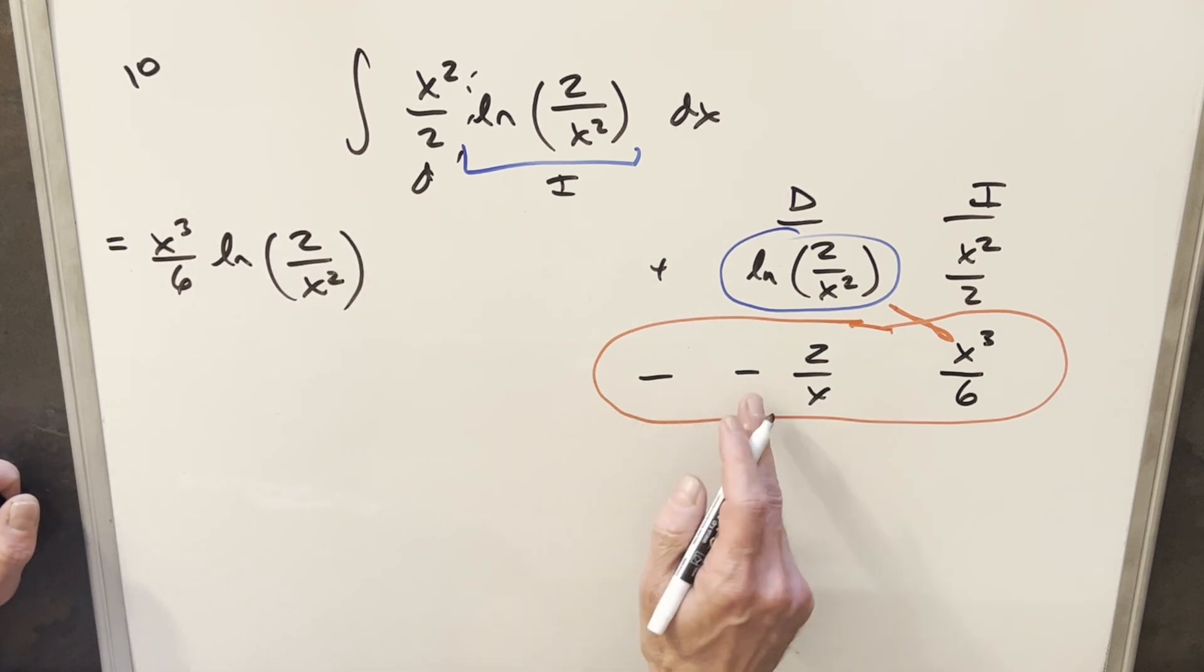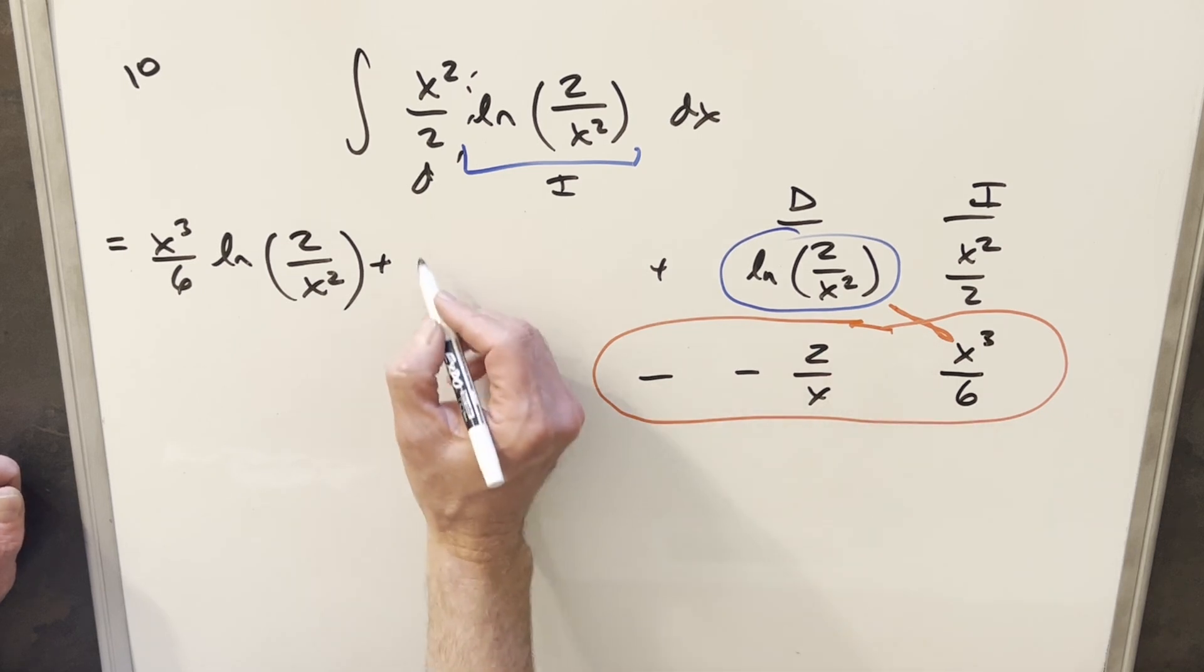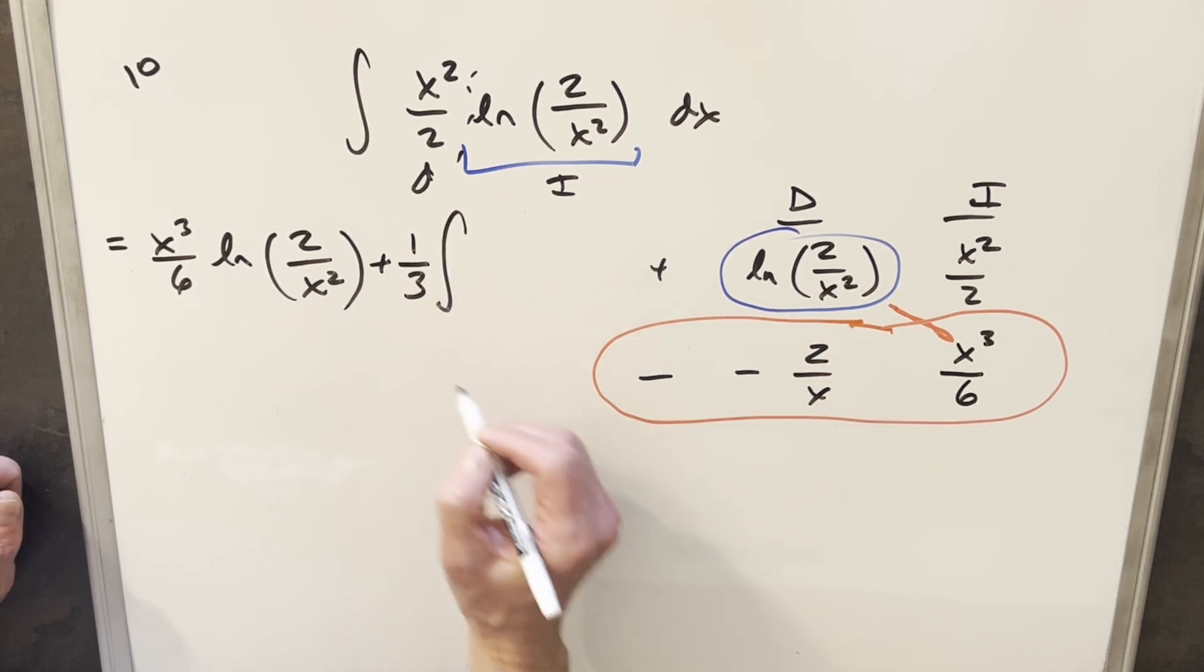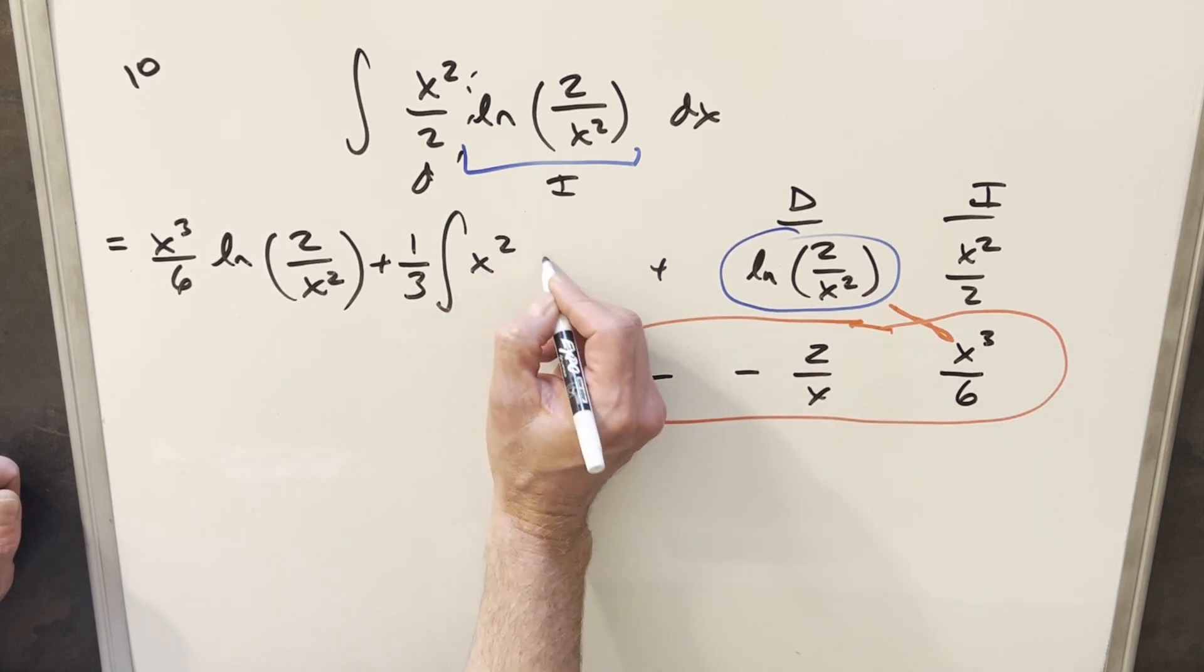Then when we put this together, minus times minus is a plus. We'll put that out front. 2 divided by 6, I can bring a 1 third out front. And then we're integrating x cubed divided by x. We're just integrating x squared over here.